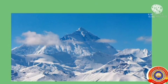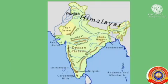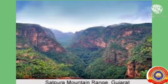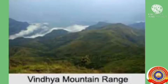The other major mountain ranges in India are the Aravalis, the Western Ghats, the Eastern Ghats, the Vindhya Ranges, and the Satpura Ranges. They are comparatively lower than the Himalayas in height. A number of rivers originate from these mountain ranges.